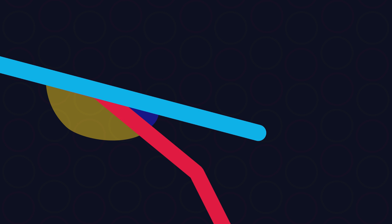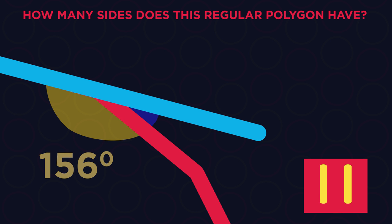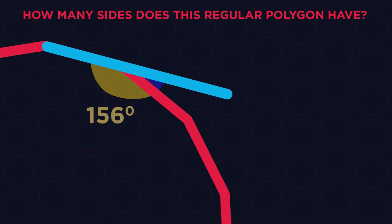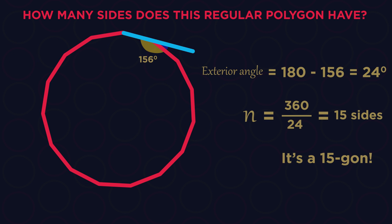Here's one for you to do. How many sides does this regular polygon have? Pause the video, work it out and click play when you're ready. Did you get it right? It's a 15-sided polygon.